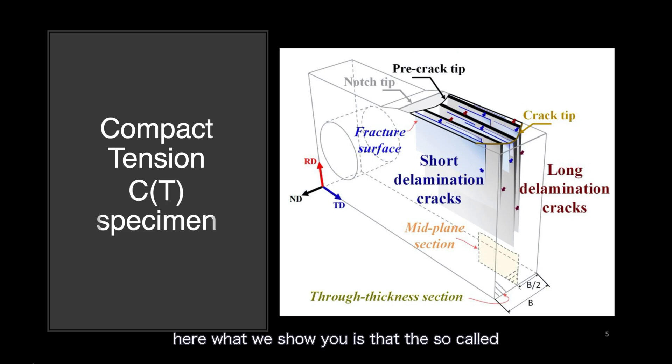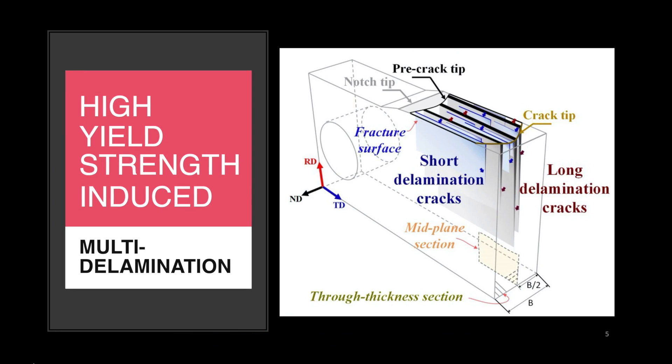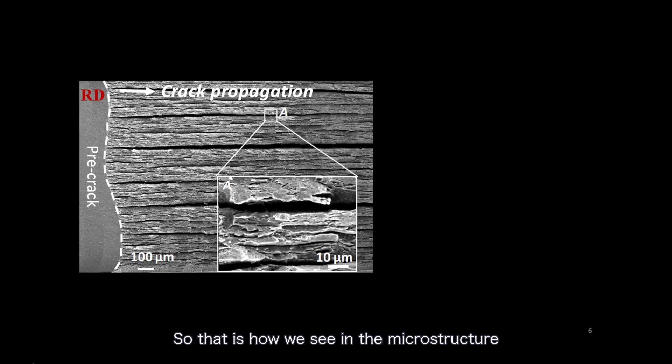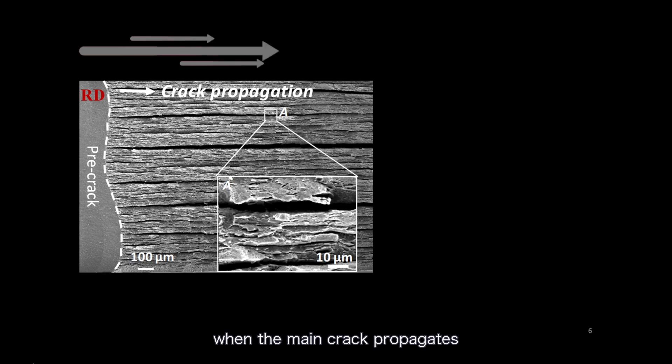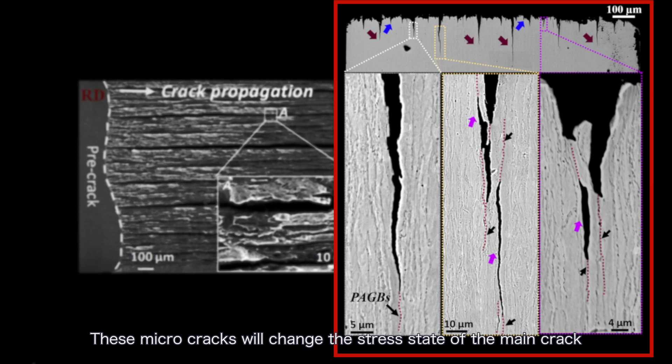What we show you is the so-called high yield strength induced multi-delamination. With this very high strength, you can activate multi-delamination, and then you can increase toughness. You can see that when the main crack propagates, there are many micro-cracks forming below the main crack. These micro-cracks will change the stress state of the main crack.